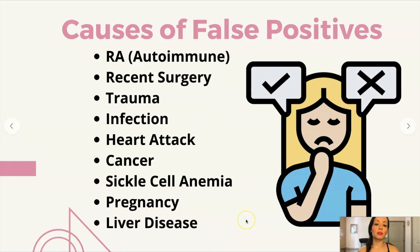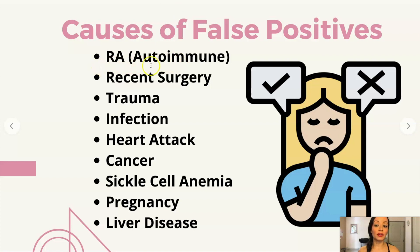Causes of false positives for a D-dimer: D-dimers can often be elevated in conditions that mimic inflammation. These include rheumatoid arthritis, which is an autoimmune condition, recent surgery, any kind of trauma, infection, a recent heart attack, cancer, sickle cell anemia, pregnancy, and even liver disease.